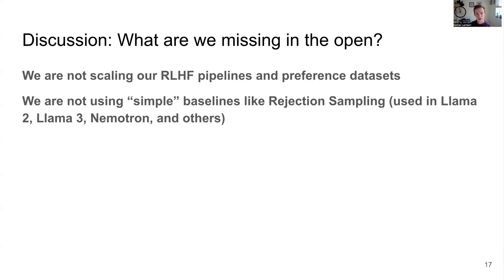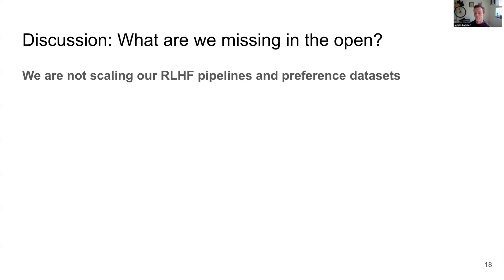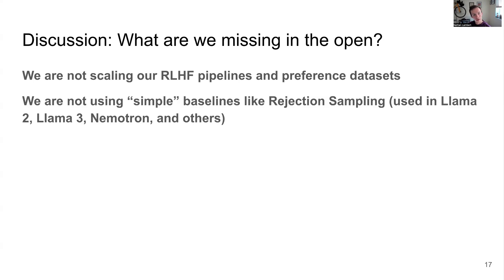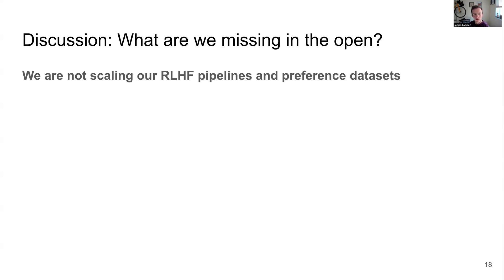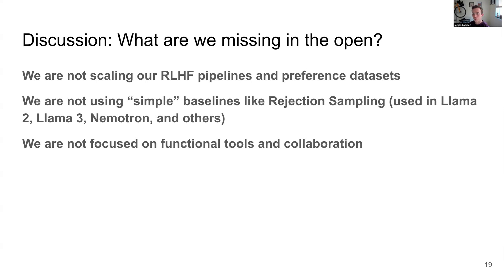This is really unlike what we are doing in this open ecosystem. We're not scaling our RLHF pipelines and preference datasets like they are. We have these static things and we're tweaking a bunch of knobs, but the closed labs are really focused on continuing to push their data — the data is the focus more than the model. The better they make their data, the better the downstream aligned model gets. We don't even have simple baselines like rejection sampling, which was the surprising star of the show in LLaMA 2 and continues to be used in LLaMA 3, Nemetron 340B, and others. We really have to add these baselines and work on better collaboration and functional tools.